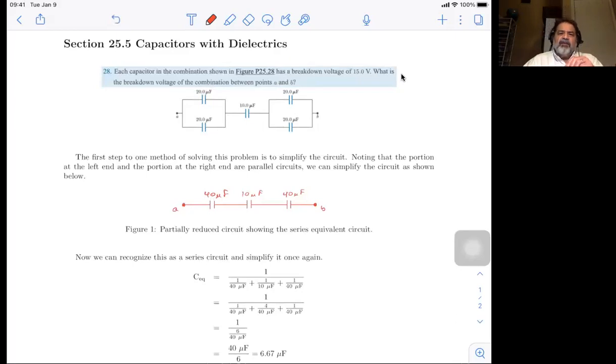So since the 10 microfarad here is the lowest of the capacitors in this string of series capacitors, it has to withstand the 15 volt breakdown, and we'll use that to calculate the total breakdown for the problem. That is the question in the problem statement. What is the breakdown voltage of the combination between point A and B? So the first thing I did is I combined these and we get a 40 microfarad, 10 microfarad and 40 microfarad between A and B. And so this is it partially reduced.